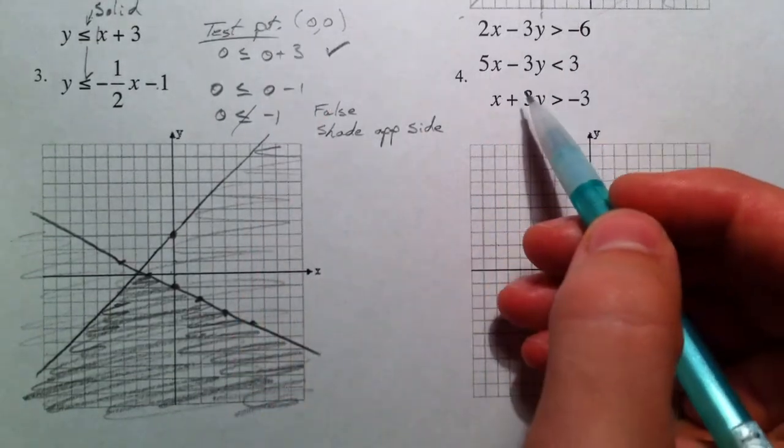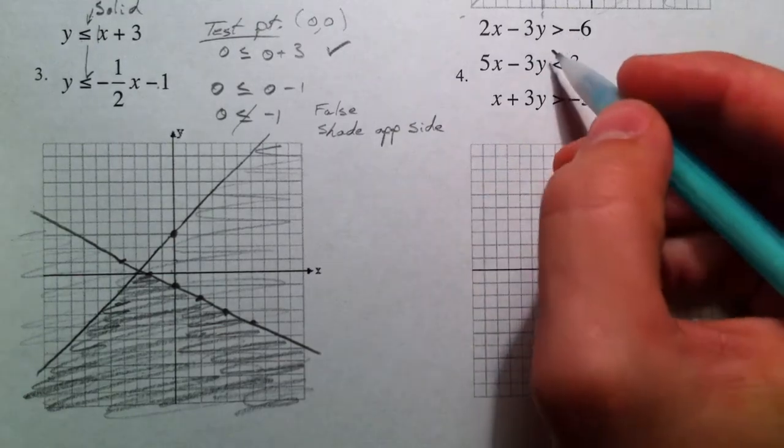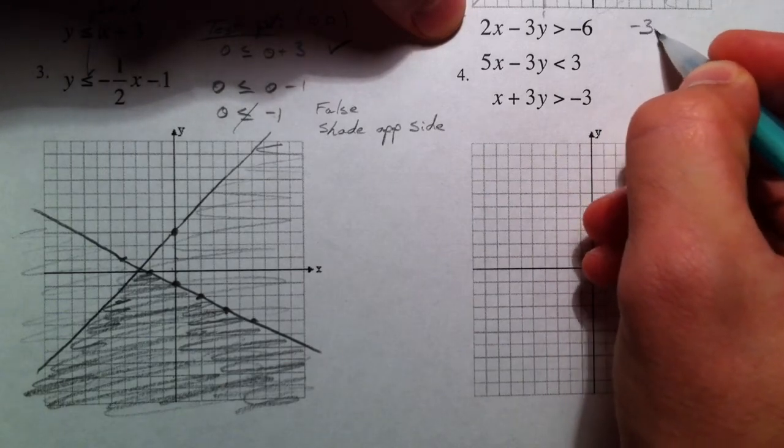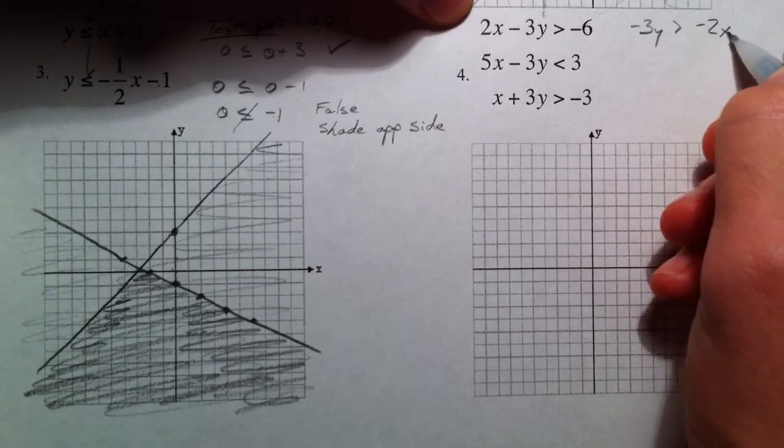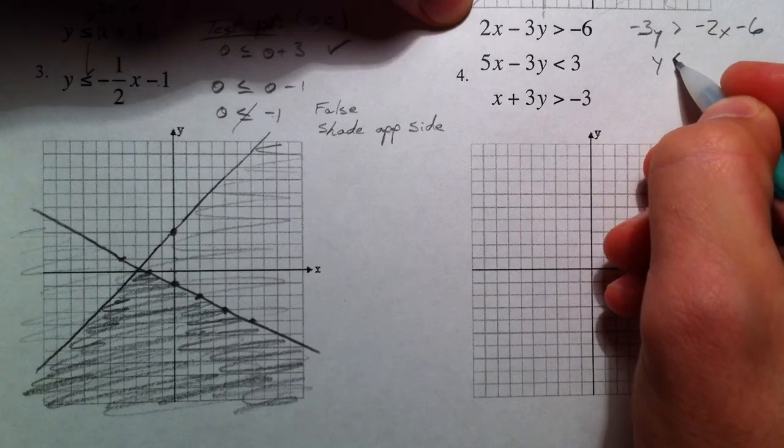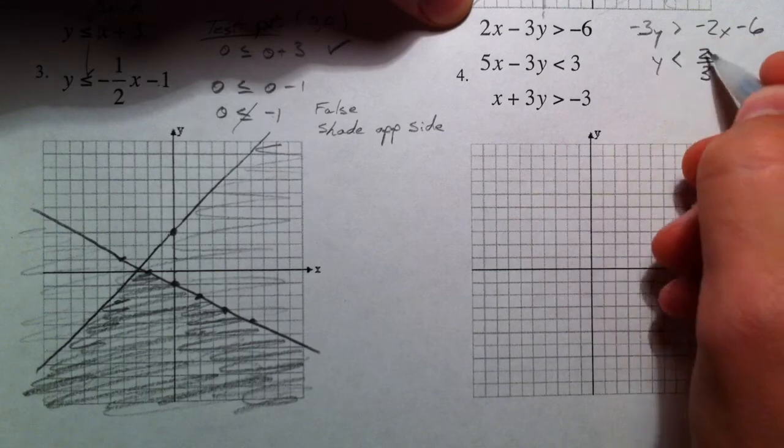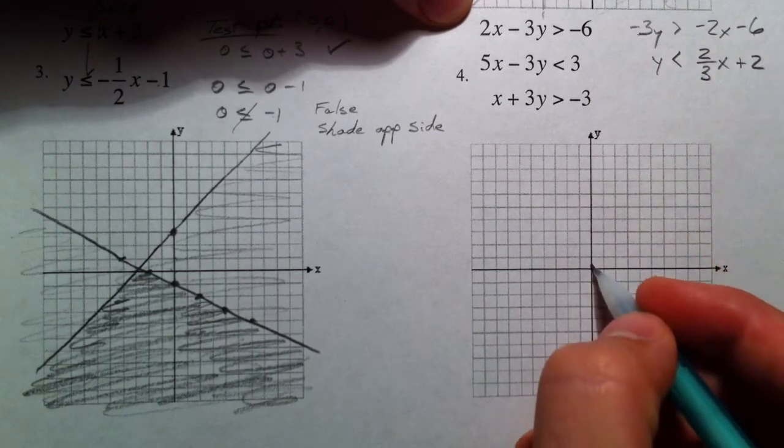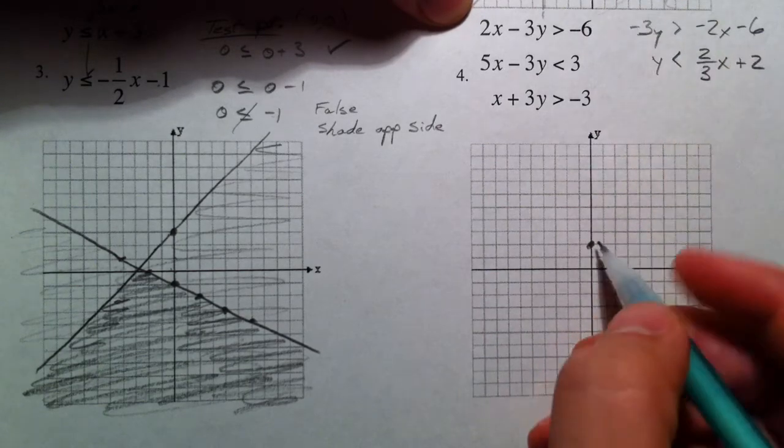They come in handy. Test points come in handy when you do it like this so that you don't have to solve all these equations for y. But some of you are so used to it, it's not a problem. So if you want to, negative 3y is greater than negative 2x minus 6. Divide by a negative 3, we flip the sign. Don't forget to flip the sign. Negative divided by a negative is a positive 2 thirds. Negative 6 divided by a negative 3 is a positive 2. Lots of chances for a mistake in that one. So be very careful.